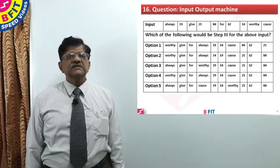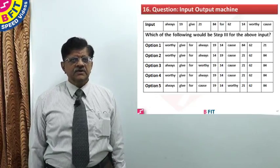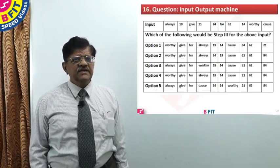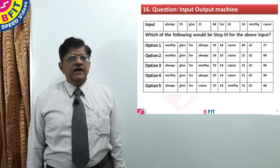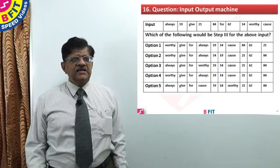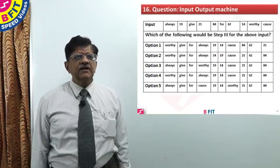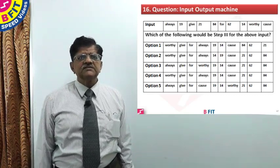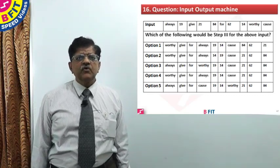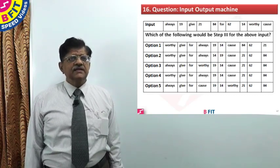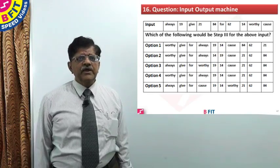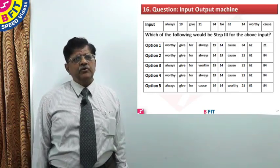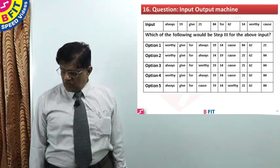Let us see question number 16, which is based on the model we have just now seen. The input of words and numbers are given: always 19, give 21, 84, far, 62, 14, worthy, cause. The question is, which of the following would be step 3 for the above input? So we will have to work it out.